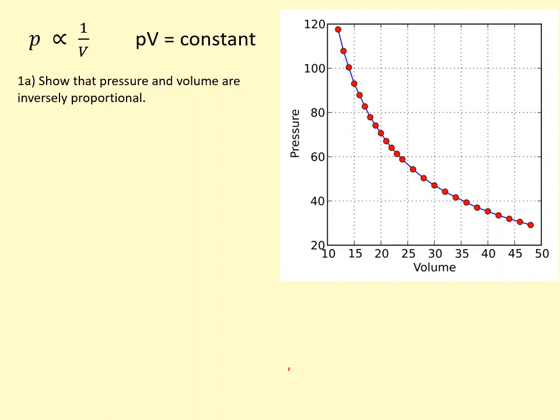According to Boyle's law, pressure and volume are inversely proportional, provided temperature and the number of particles is constant. If we plot pressure and volume on a graph, it will give an inverse relationship, a reciprocal graph, which is y equals 1 over x, similar to this graph that you would have come across in maths.